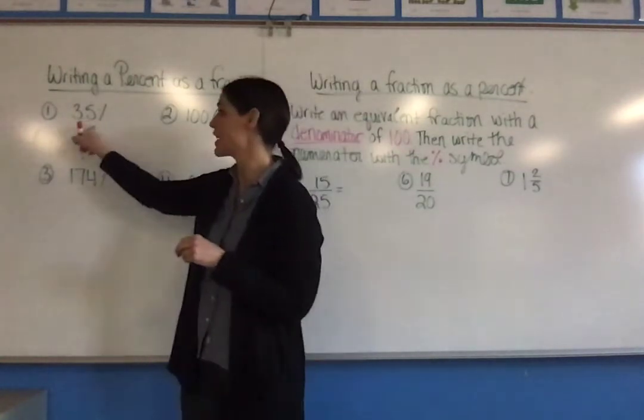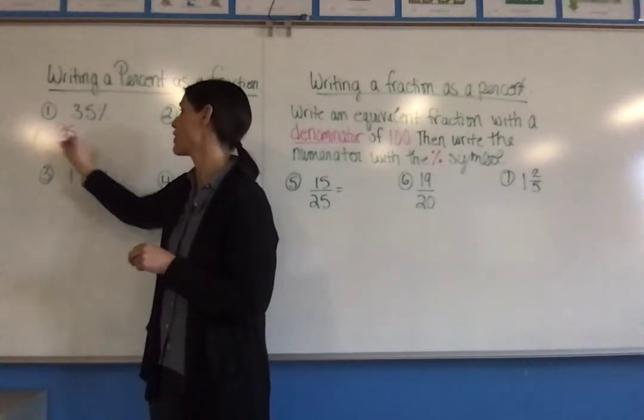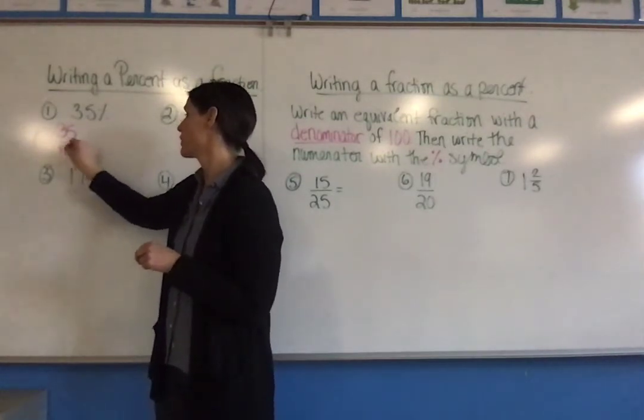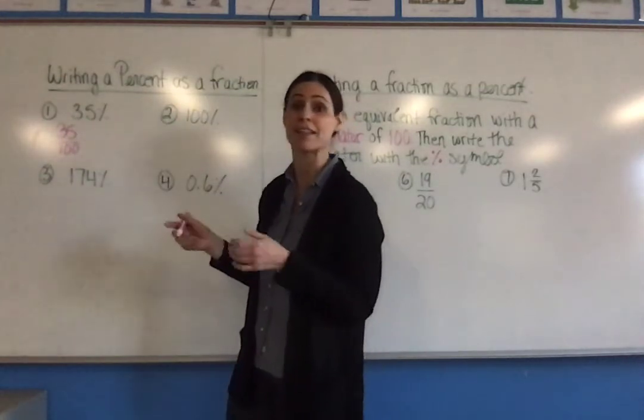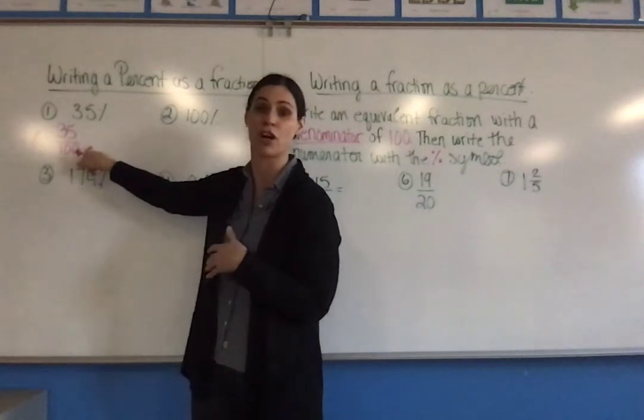So I'm going to take the number, which is 35, and I'm going to write it as a fraction over 100. Because think of it like money, there's 100 pennies in a dollar. So this is like 35 cents or pennies out of a total of 100.